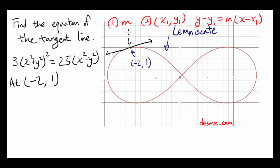To find the equation of a line you need two things: the first is the slope, or m, and the second is one point on the line, or (x1, y1). If you know the slope m and the point (x1, y1), the equation of the line is y minus y1 equals m times (x minus x1), by the point-slope form of a line. Now let's start by finding the slope.